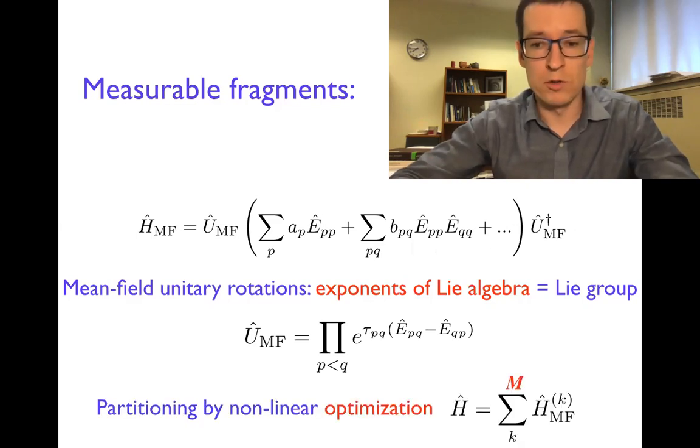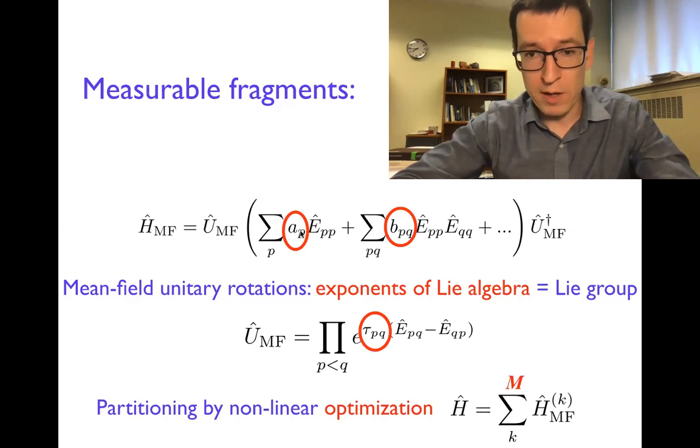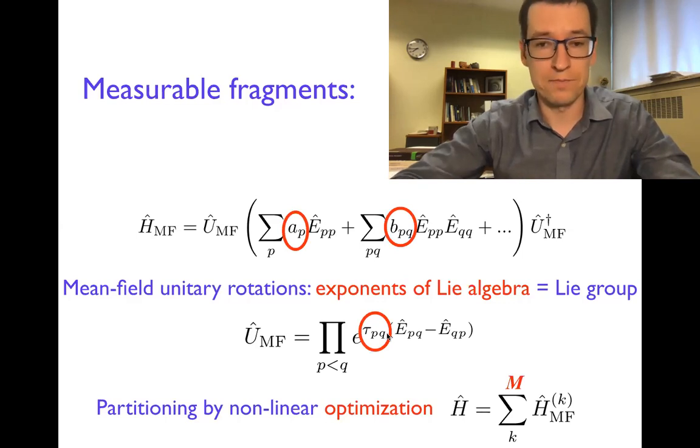And then in order to represent the Hamiltonian as a linear combination of such mean-field solvable Hamiltonians, we do the non-linear optimization where we're trying to find the lowest M, which provide us with the mean-field Hamiltonians that, if you sum them all together, give you the original Hamiltonian. For that, we optimize the coefficients in this function and in the mean-field rotations.